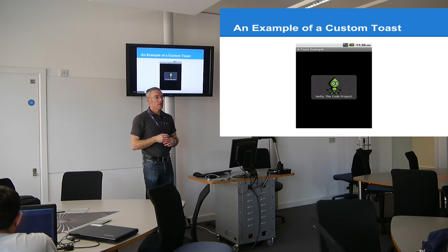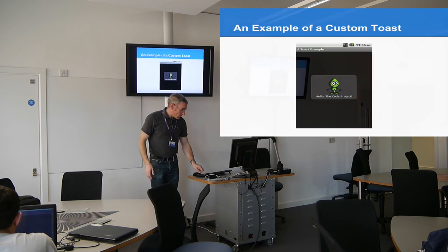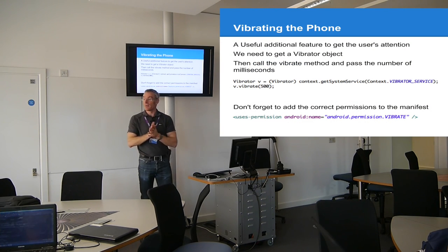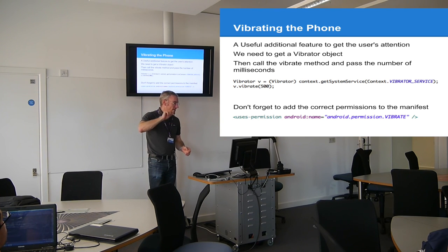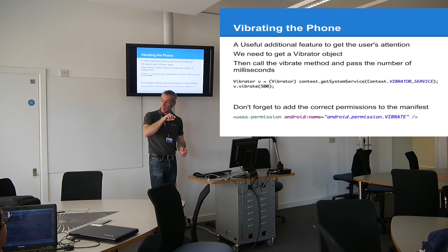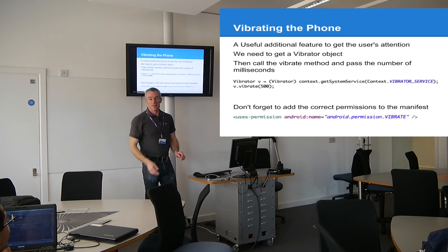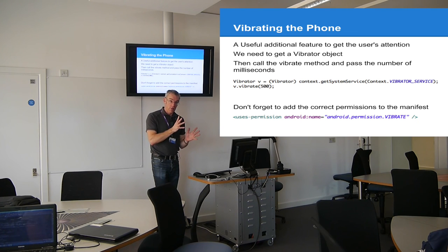There's a little example of a custom toast with graphics, and you can even change the background of the overall view. Another useful feature when working with services is vibrating the phone. You get a Vibrator object with: Vibrator v = (Vibrator) context.getSystemService(Context.VIBRATOR_SERVICE) — similar to how we got the location service. Of course, you'll also need to add the VIBRATE permission to the manifest, which is the classic thing to always forget.